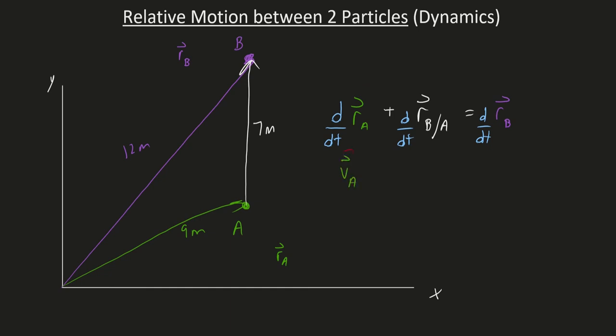So, the derivative of position is by default the velocity. The velocity of this particle A measured from our absolute origin right here. This term right here will be the velocity of B. The absolute velocity of B because, again, it's measured from this non-moving origin right here. We have our plus. And here's our interesting term.